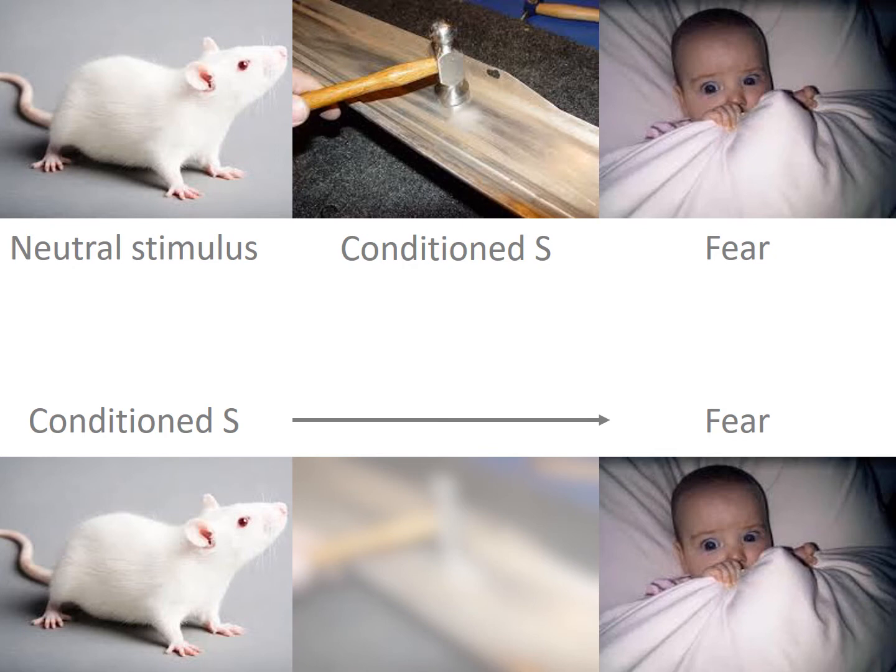Nobody knows what actually happened to Little Albert afterwards. Some investigators believe he was a boy named Douglas Merritt, who died a few years later from hydrocephalus—basically water on the brain. We don't know whether his fears persisted.